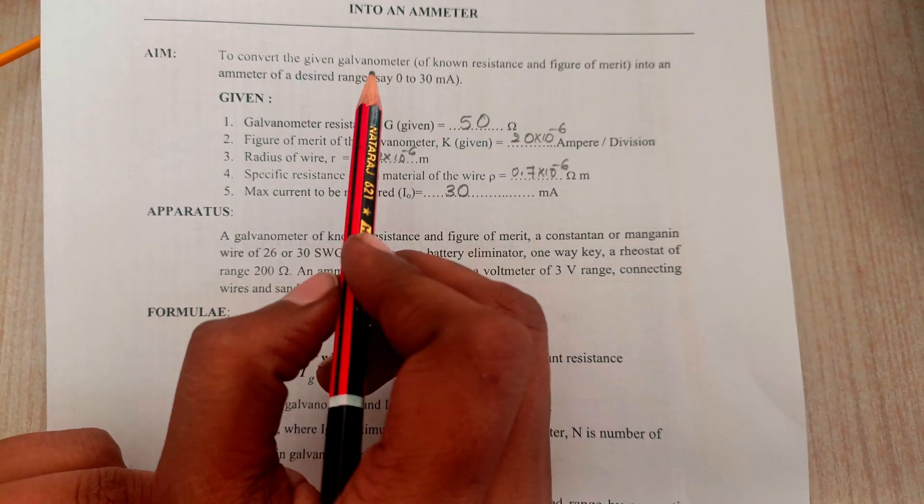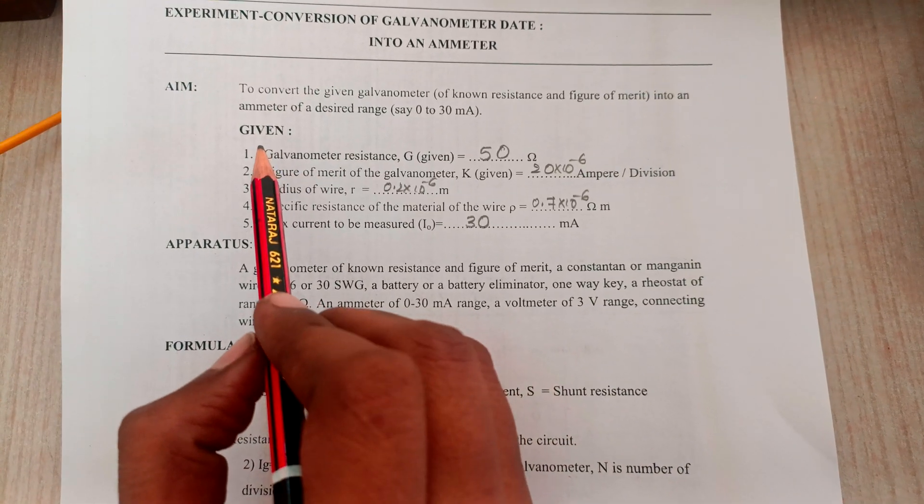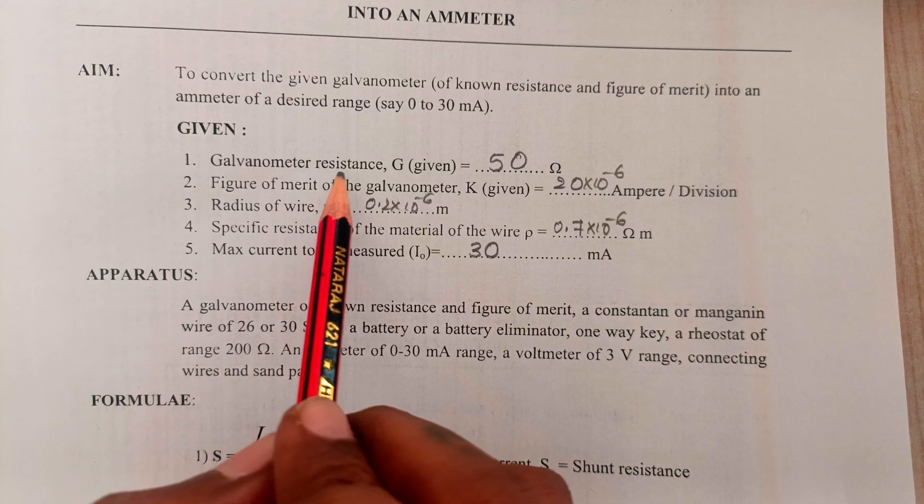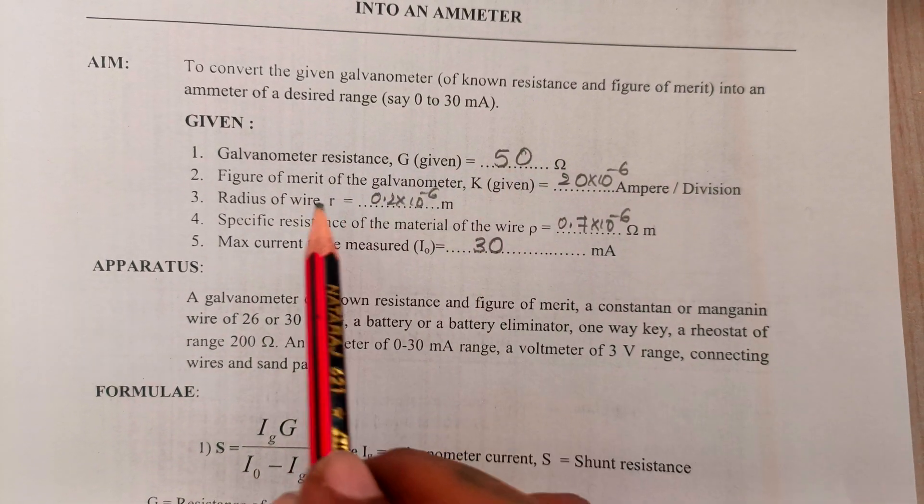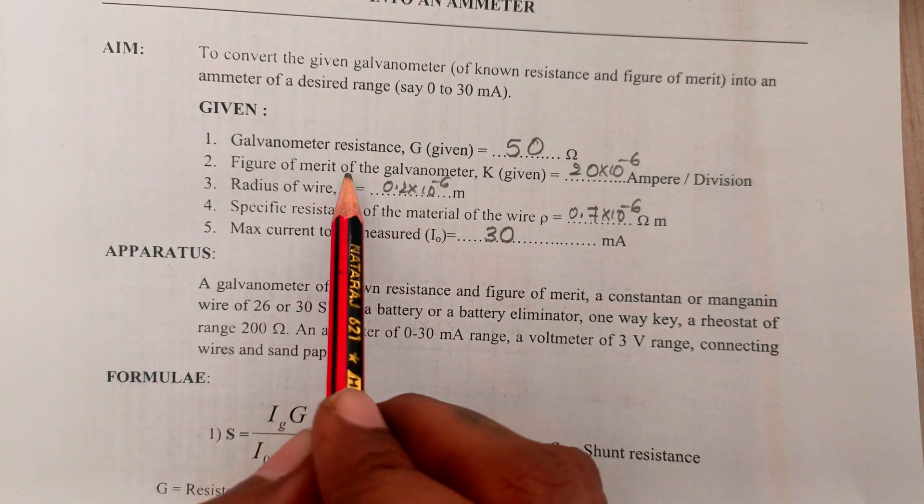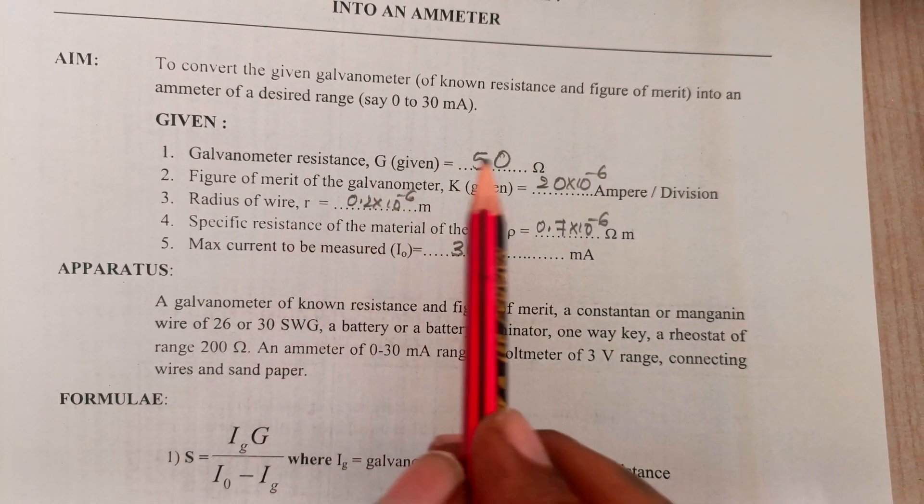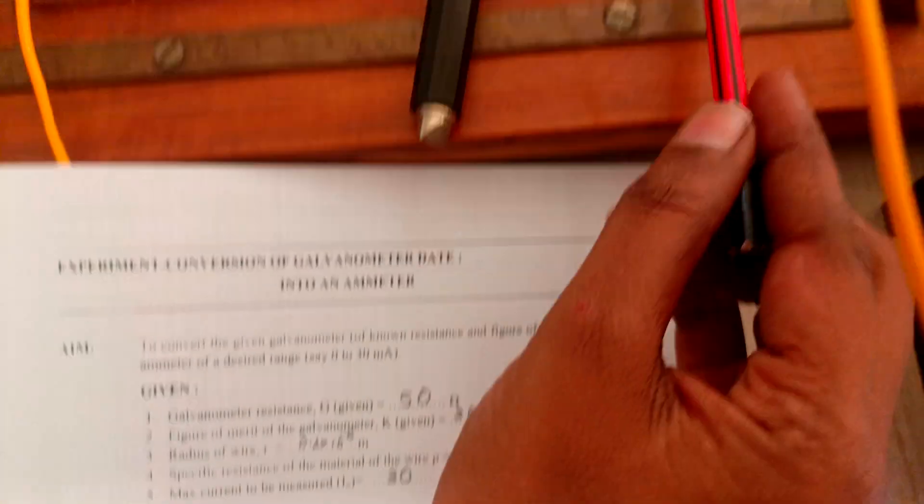For doing the experiment we are going to consider some given data. The galvanometer resistance is 50 ohms and the figure of merit of the galvanometer K is 20 microampere per division.